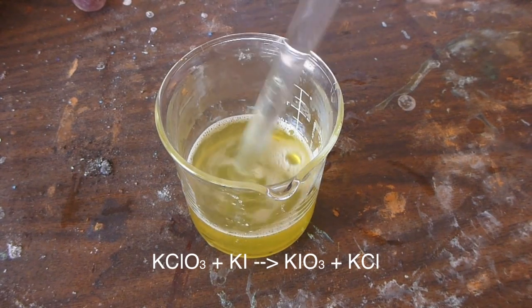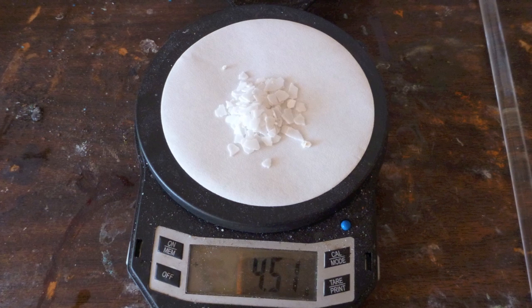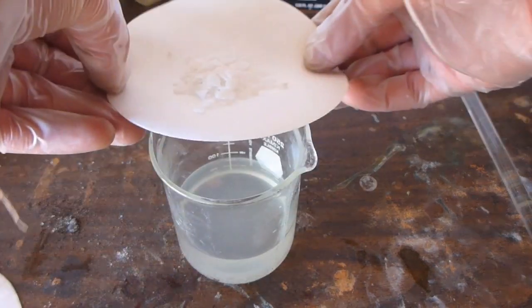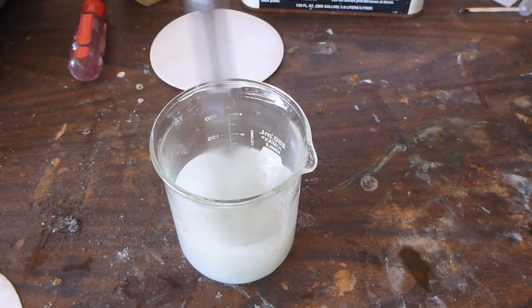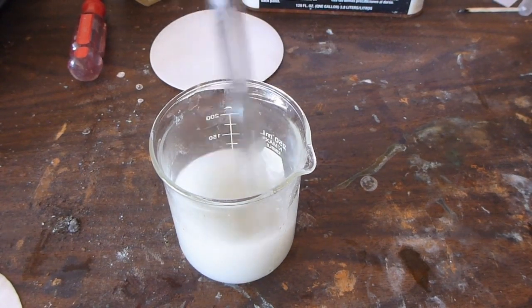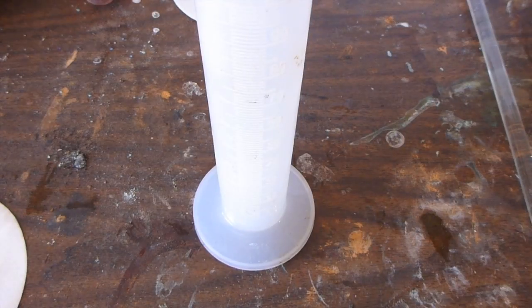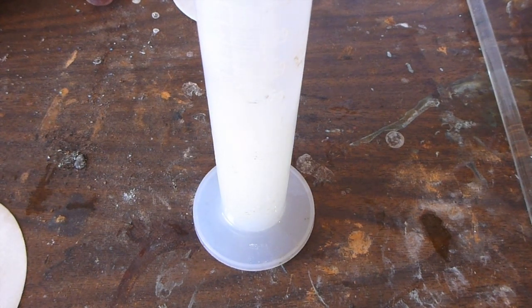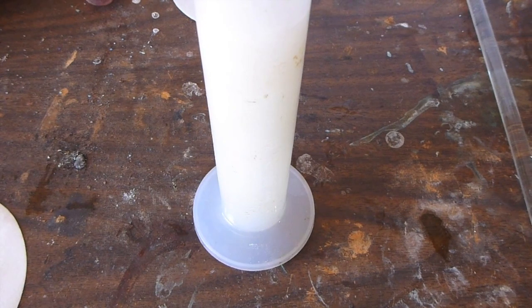Now weigh out 4.5 grams of potassium hydroxide. This is needed to turn the iodate into periodate. So take the solution and add the potassium hydroxide to it and dissolve it. Now when you dissolve the potassium hydroxide, that's going to force a lot of potassium chloride out of solution, and you're going to get a precipitate. So make sure you get all the potassium chloride into the tall graduated cylinder.